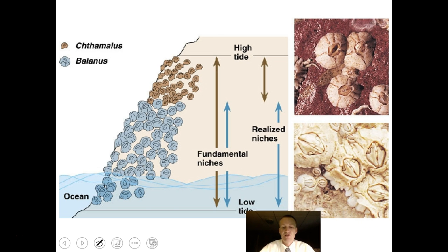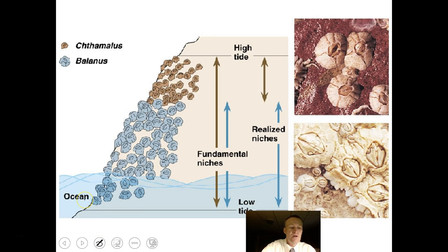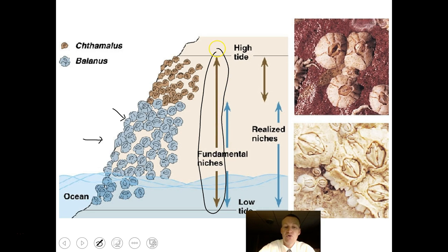One of the more famous experiments involves two species of barnacles — a brown barnacle and a blue barnacle. A scientist noticed a separation line between them and wondered if the brown barnacle would love to live further down. He removed all the blue barnacles with a chisel and hammer, and discovered that the brown barnacle's fundamental niche — where it would love to live without competition — extends all the way from the high tide line to the low tide line.